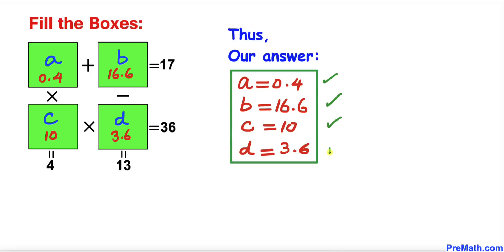So our final answers are: A equals 0.4, B equals 16.6, C equals 10, and D equals 3.6. Thanks for watching and please don't forget to subscribe to my channel for more exciting videos. Bye!